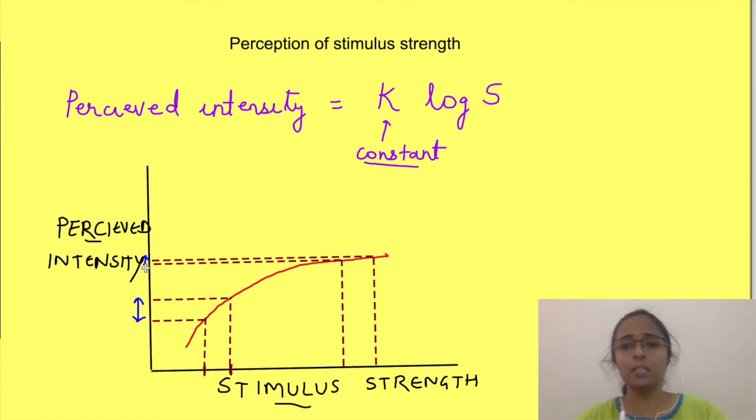But if stimulus intensity increases the same amount as in the initial case, perception does not increase that much. So at higher intensities of stimulus, you need greater stimulus change for just noticeable difference. That's how Fechner's law explained the concept of Weber.